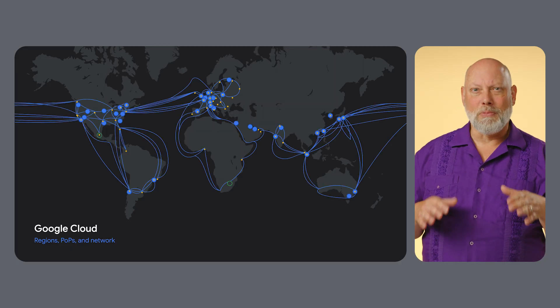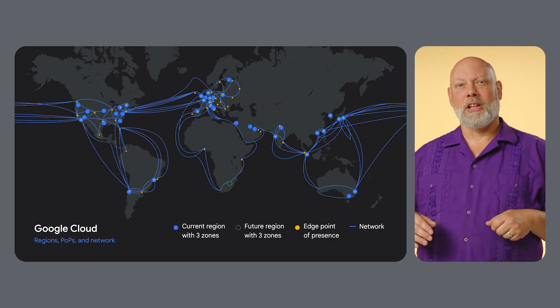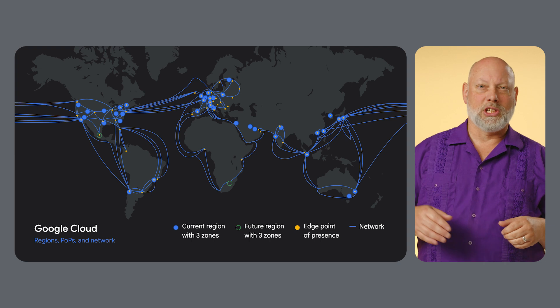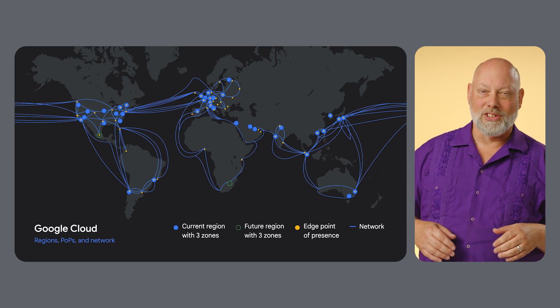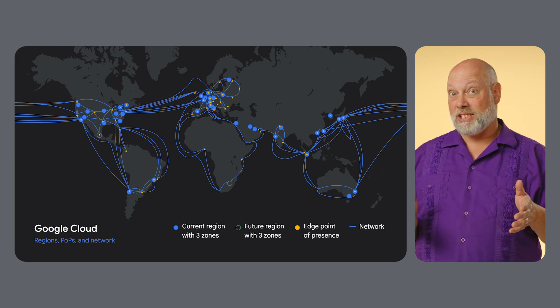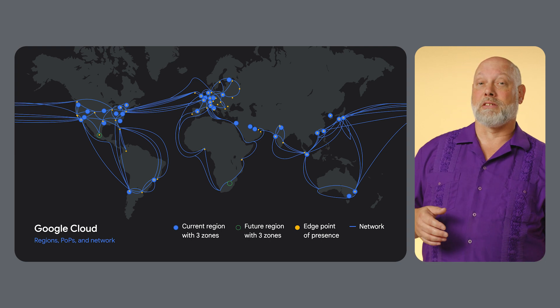First, let's discuss multi-region support. For high availability to your end users, you need to serve your models from multiple geographic locations. This ensures that if one region has an issue, your traffic is routed to another.